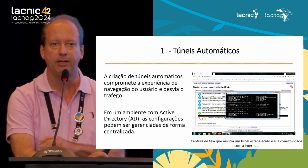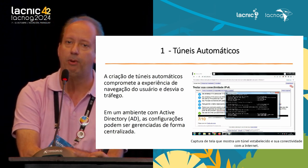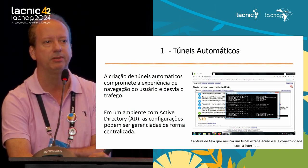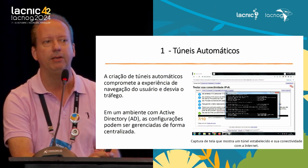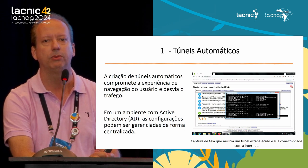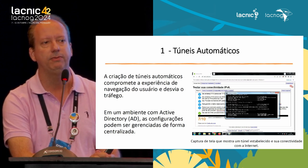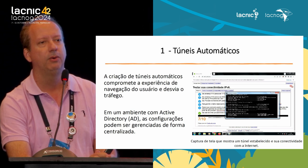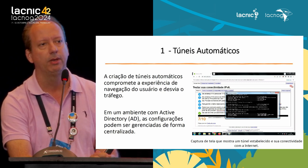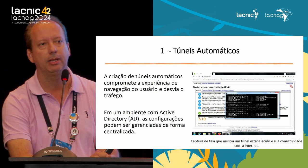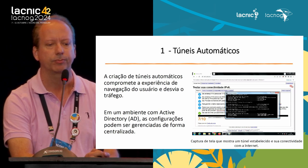Here we have three practical examples of situations that may occur in a network when we don't monitor IPv6 traffic. The first one is the creation of automated tunnels that are created in Windows when no local address is delivered. When Windows checks that no address is delivered, to promote the use of IPv6 it generates an automatic tunnel, which can be a problem because it adds a standard route with a longer delay — a terrible experience for the user.